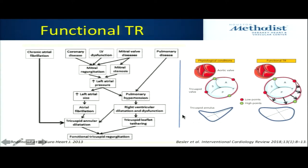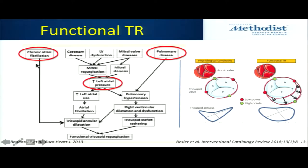One of the things that's interesting when you talk about functional TR — which is about 80% of all the TR we have to deal with — is how do you get there? There are only a few ways: chronic atrial fibrillation giving annular dilation, increased atrial pressure generally from left-sided issues, and pulmonary diseases. They all dilate your tricuspid annulus or ventricle primarily, giving you secondary or functional TR.